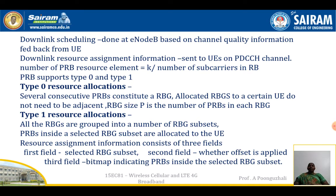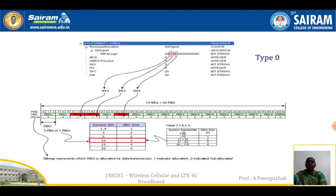In Type 1 resource allocation, all RBGs are grouped into a number of RBG subsets, and the PRBs inside a selected RBG subset are allocated to the UE. The resource assignment information consists of three fields: the selected RBG subset, whether an offset is applied, and a bitmap indicating PRBs inside the selected RBG subset.